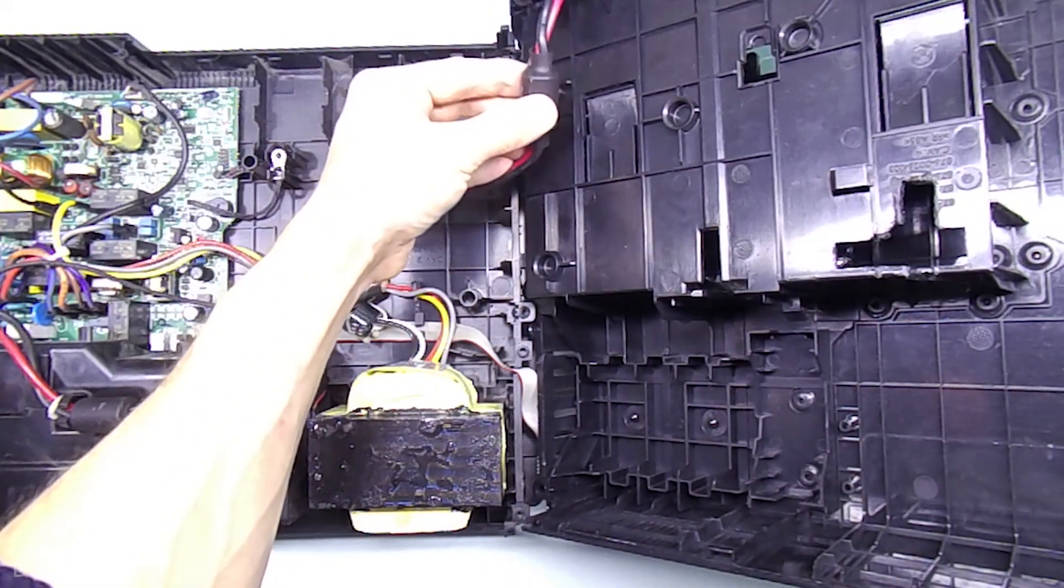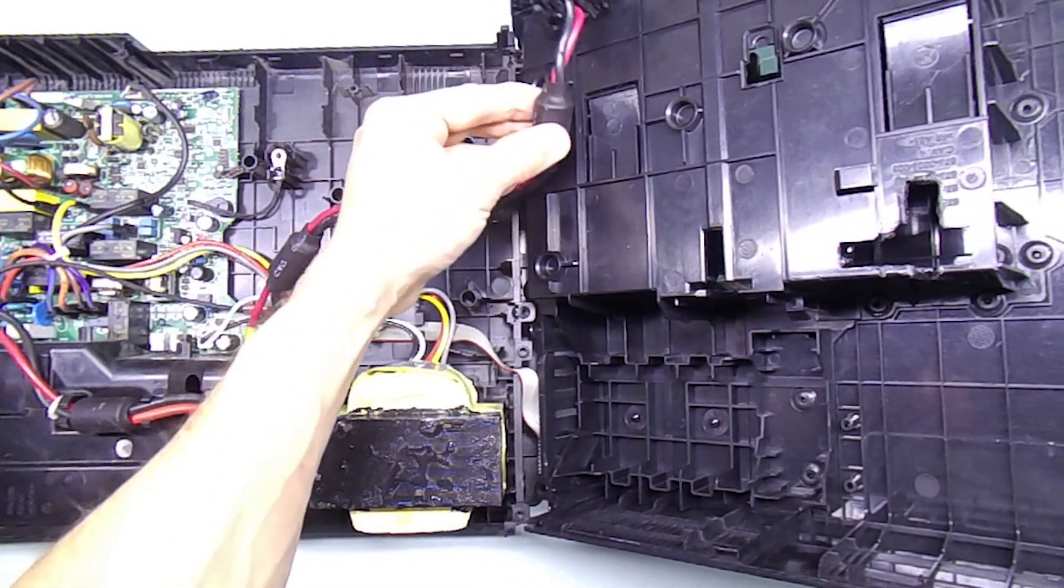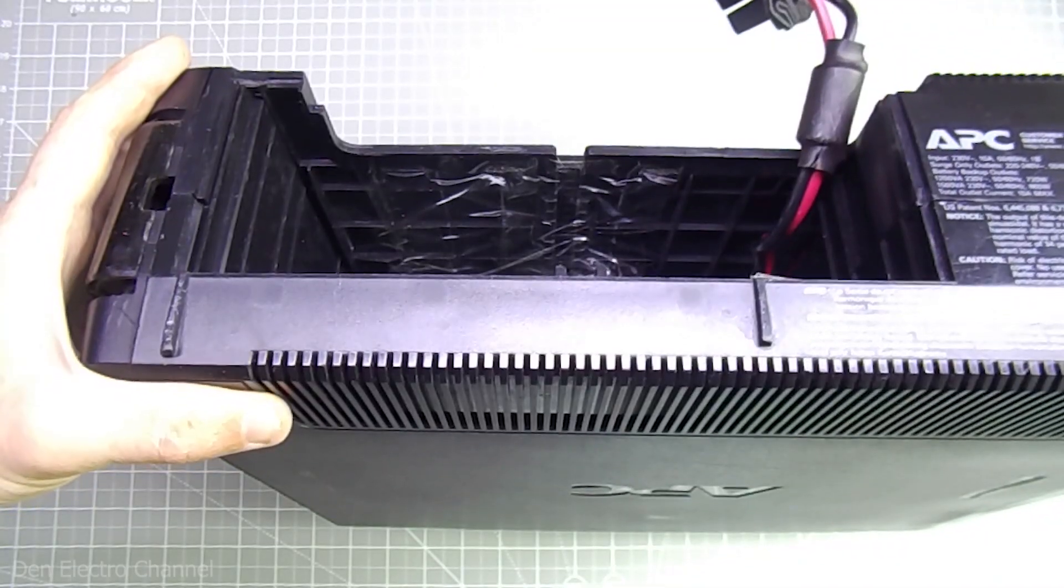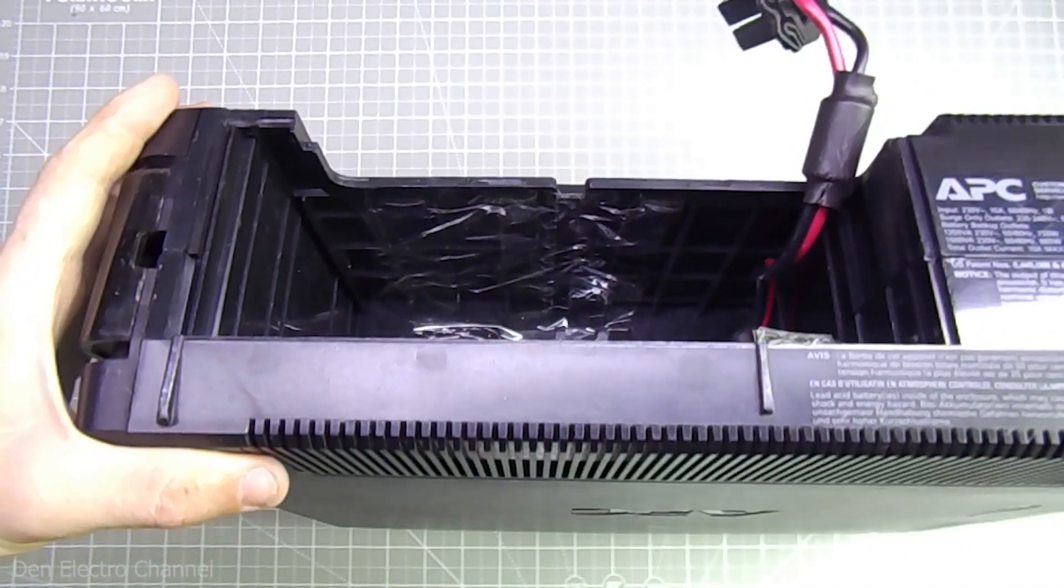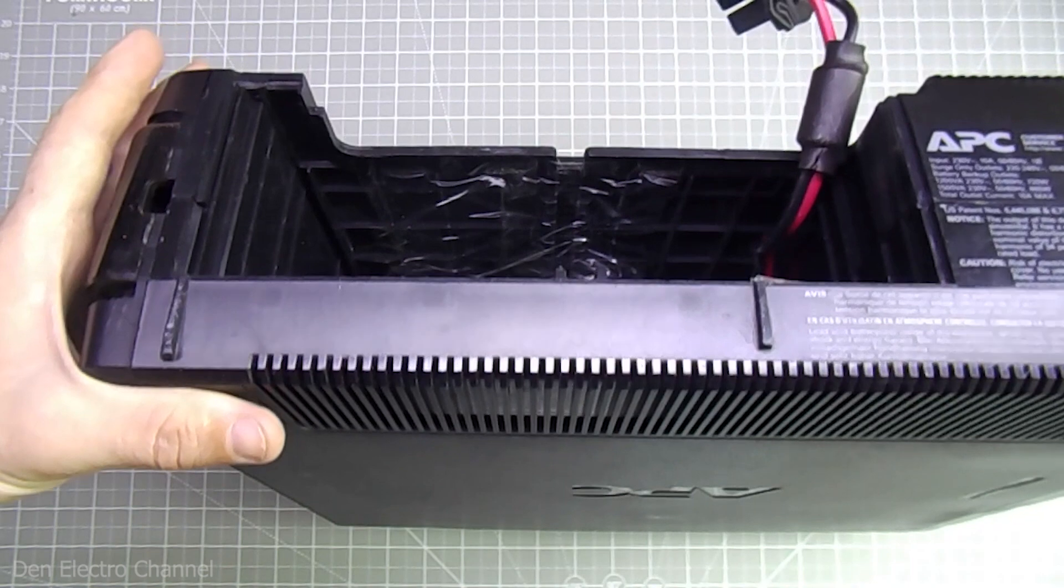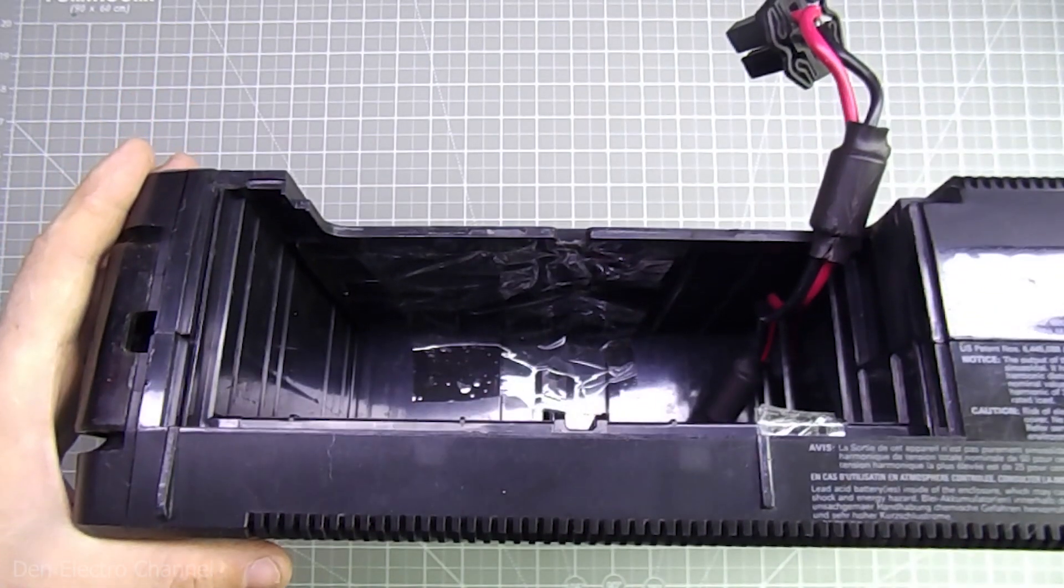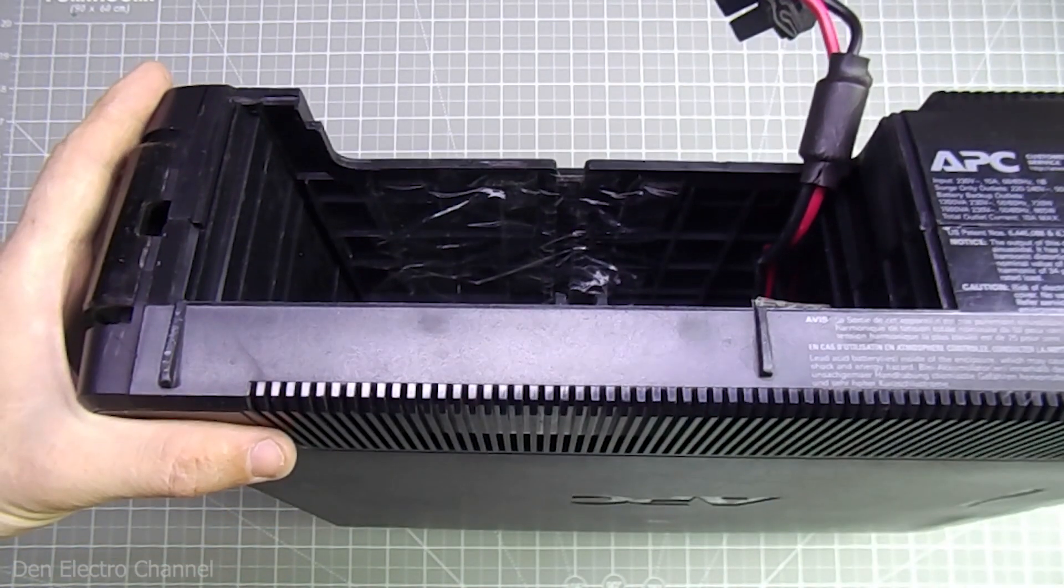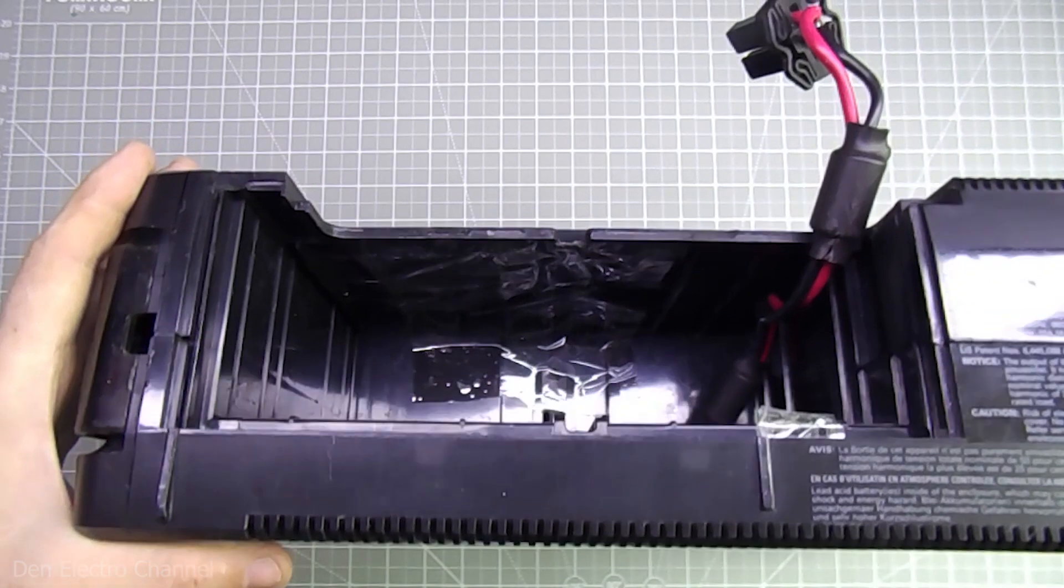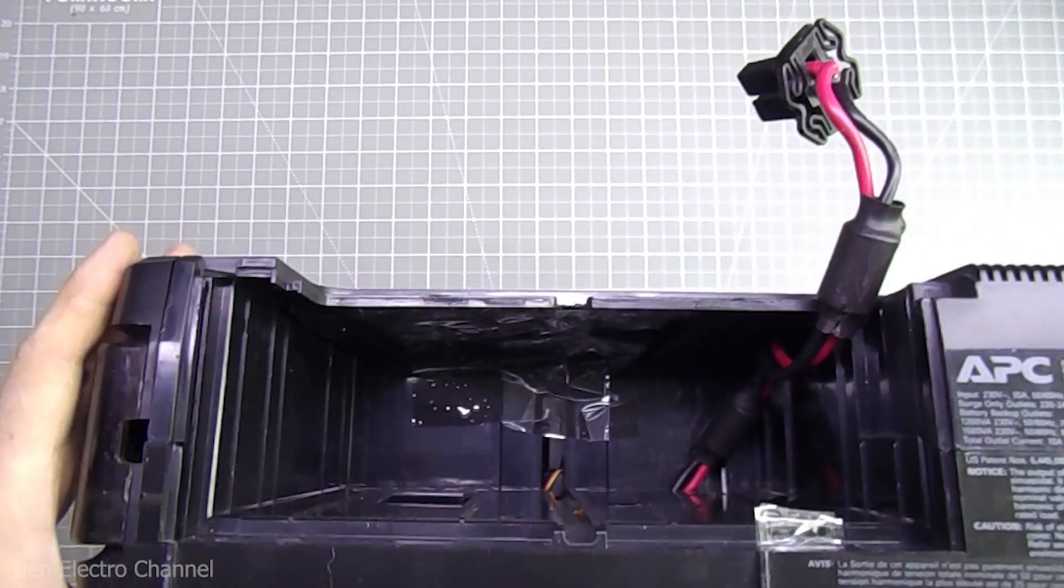Inside the battery compartment, there were a lot of stiffening ribs on the wall. They had to be removed with wire cutters and sealed with tape to make the surface smoother. Otherwise, the new batteries will be difficult to insert, and you may accidentally strip off their outer insulation.